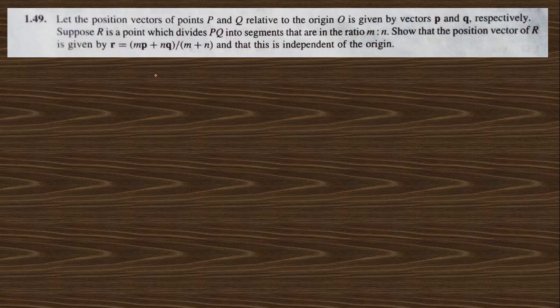Problem 1.49 says: the position vectors of points P and Q relative to the origin are given by p-vector and q-vector respectively. Suppose R is the point which divides PQ in the ratio m:n. Find the position vector of R, and show this is independent of the origin.